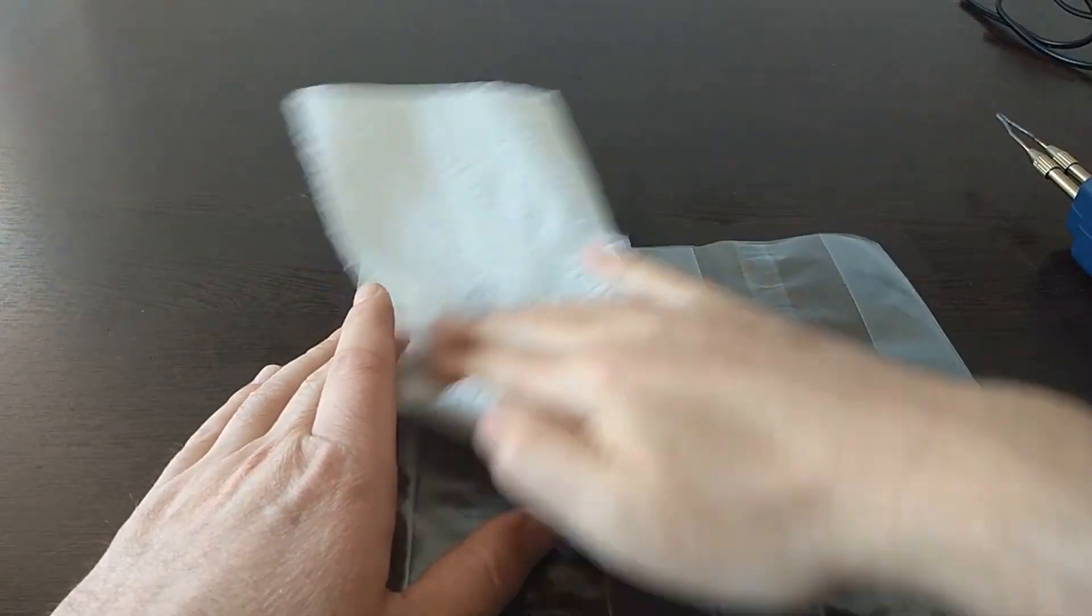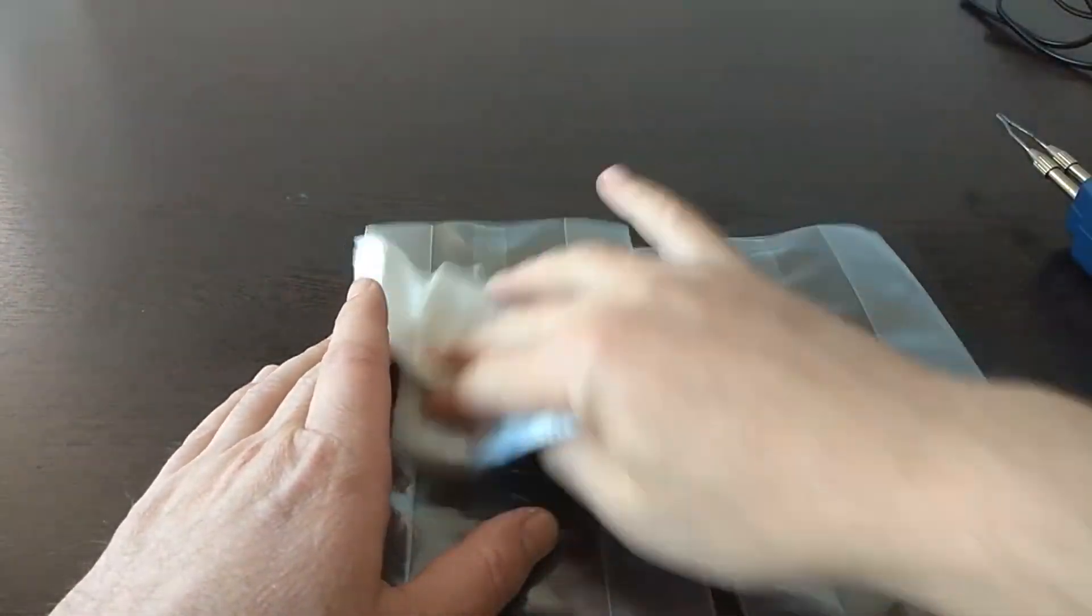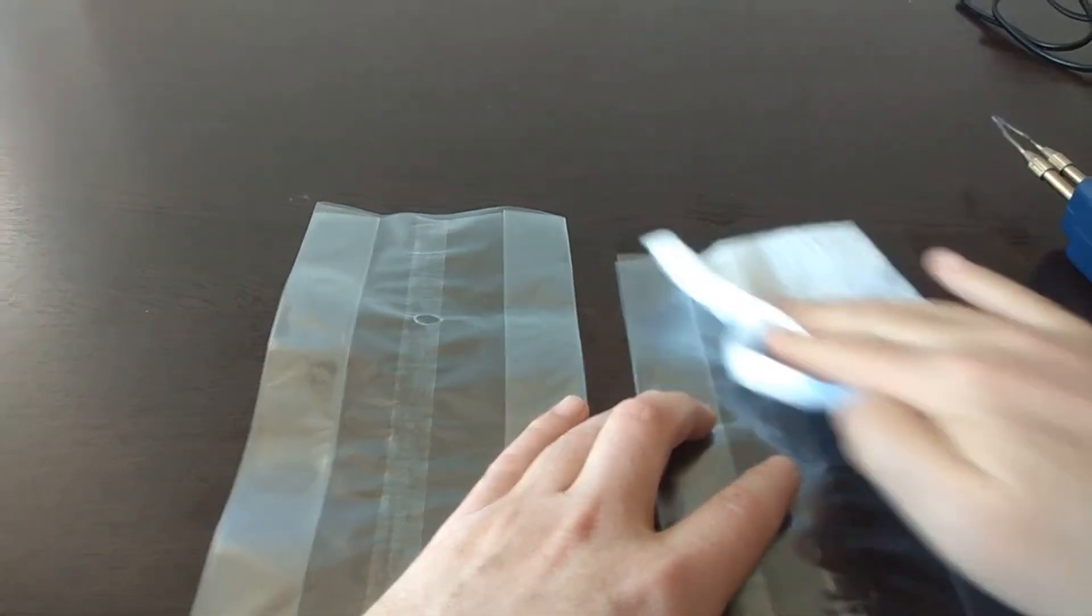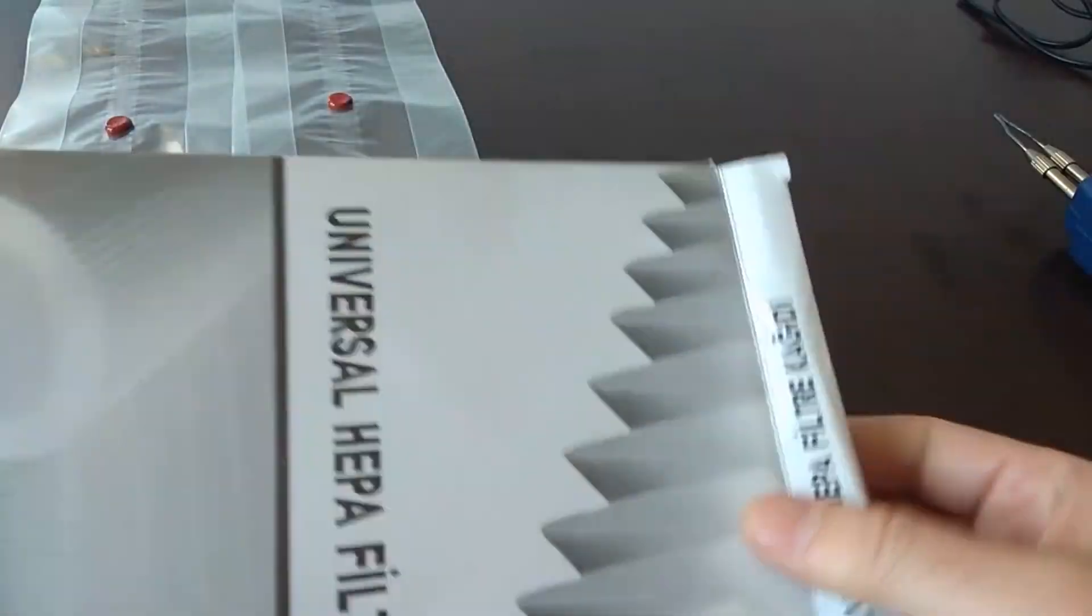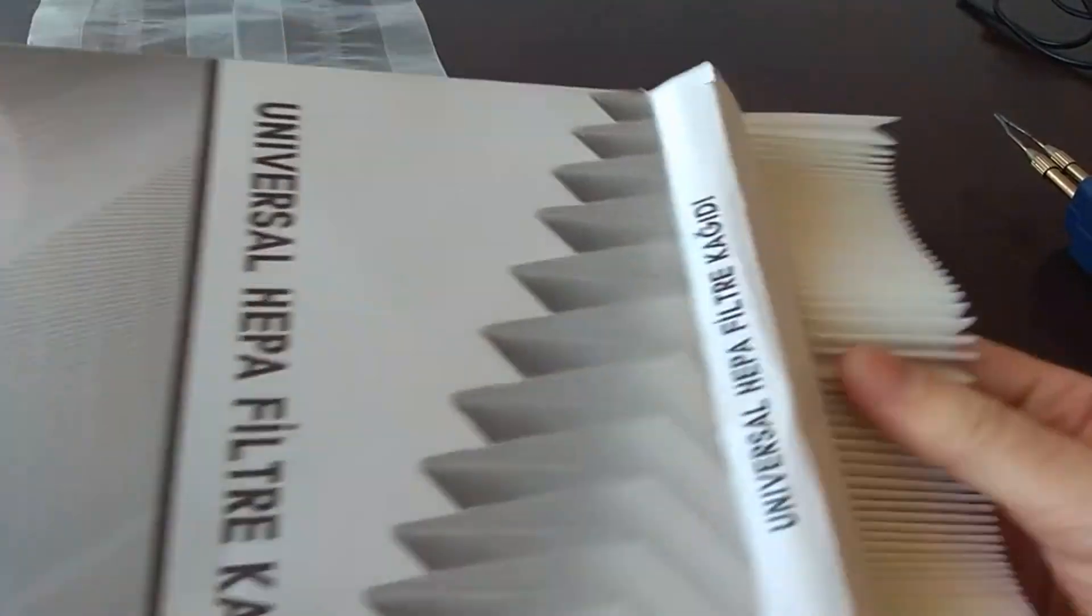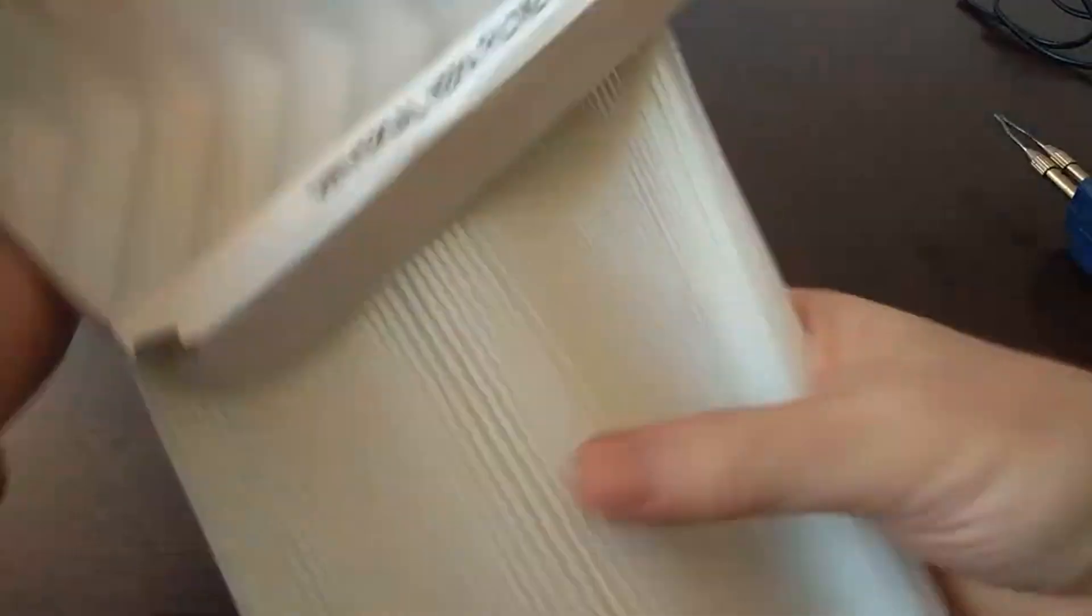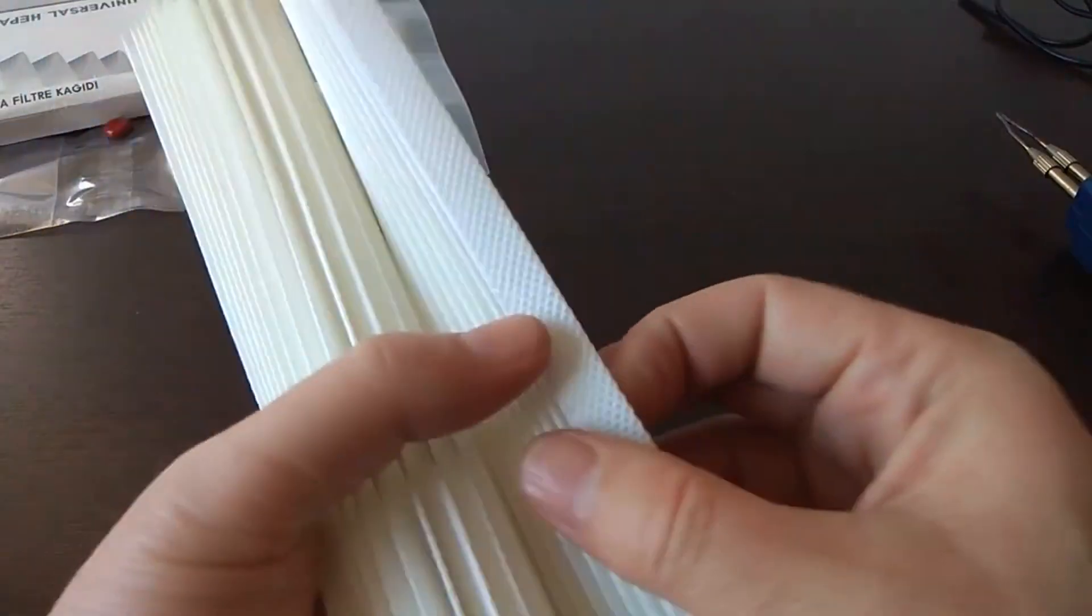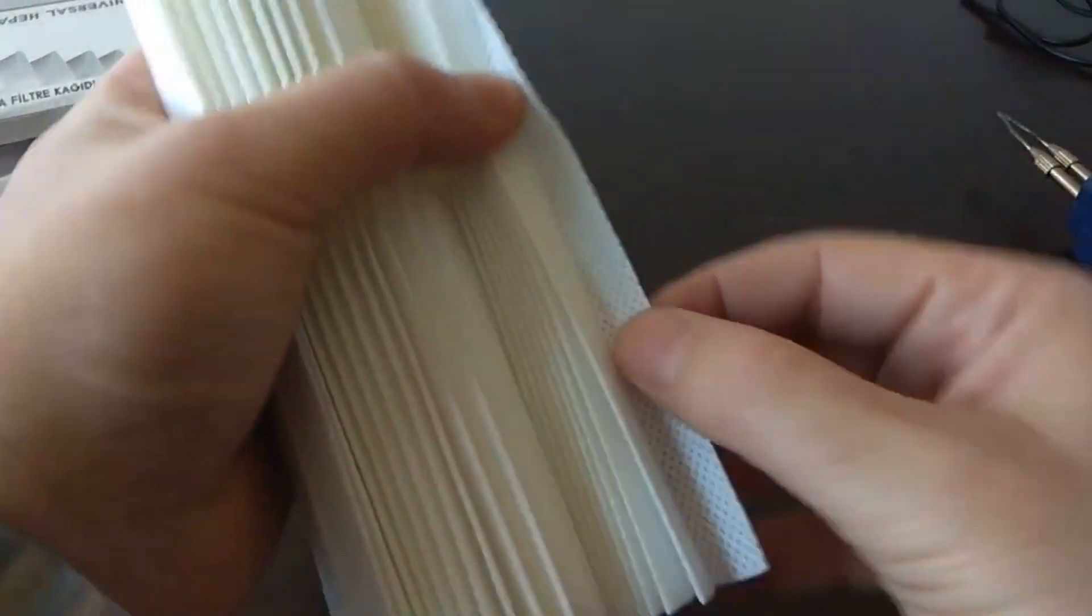I will wipe these places with alcohol first. I will remove the paint from here. The filter is like this, like an accordion - it's folded. 1 centimeter each wing.